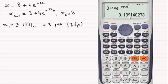3.19914 and so on. Now we need to give our answer to three decimal places, so what I'm looking for is to see when this fourth digit settles and stays exactly the same. So x₁ at the moment